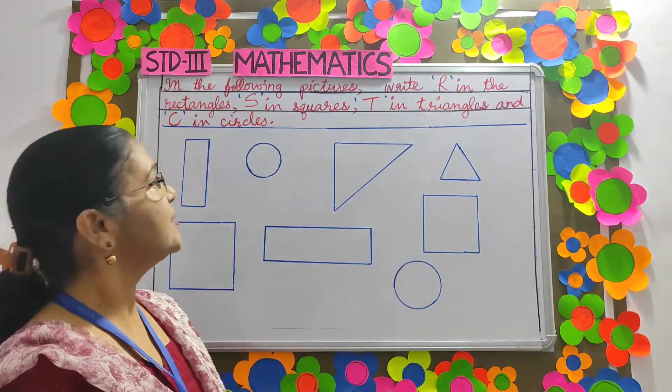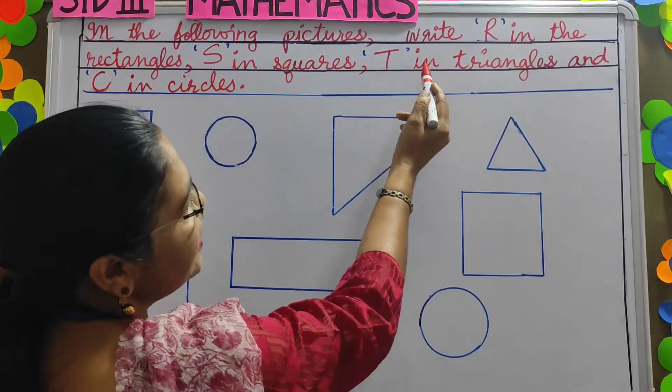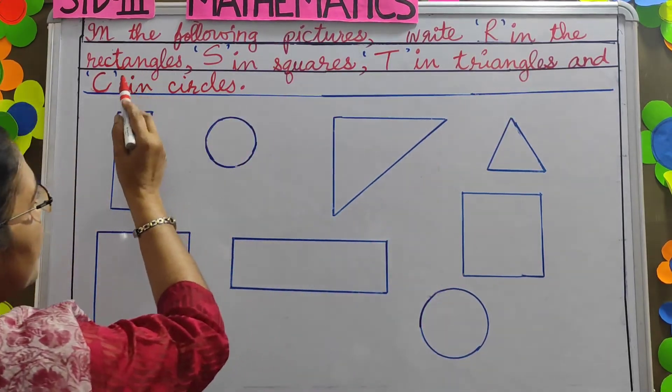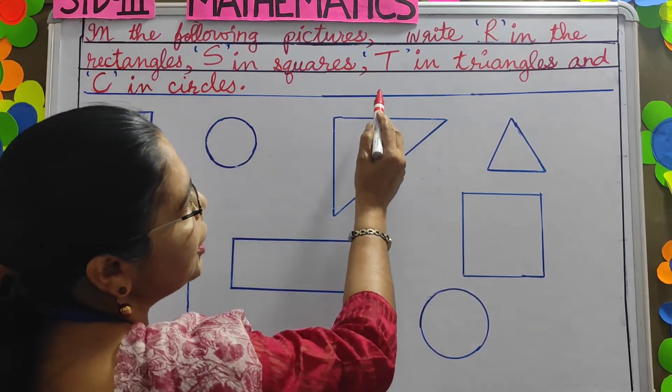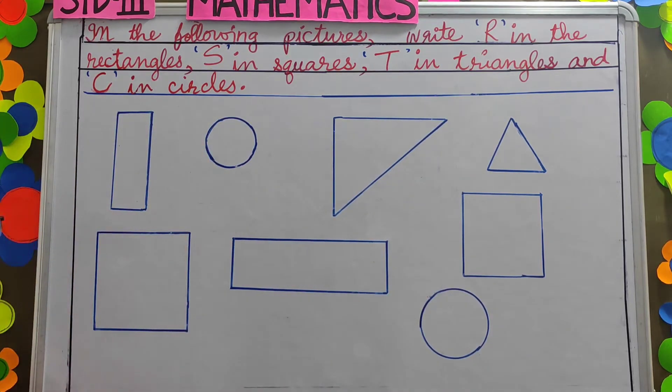Let us do this exercise. In the following pictures, write R in the rectangles, S in squares, T in triangles and C in circles.